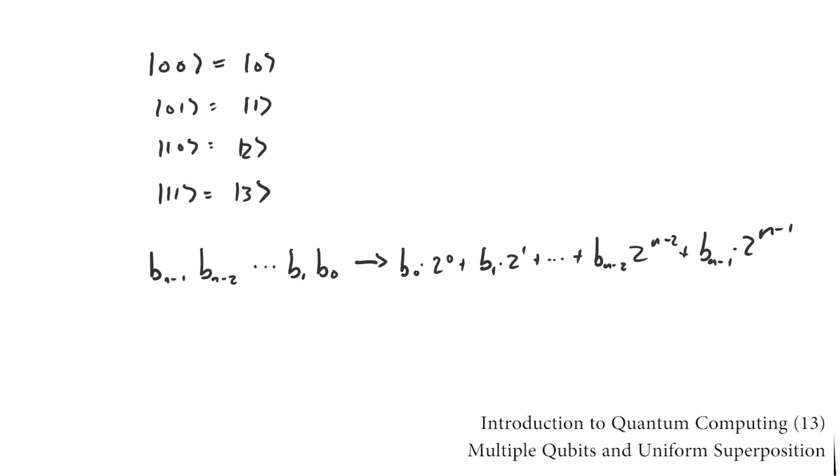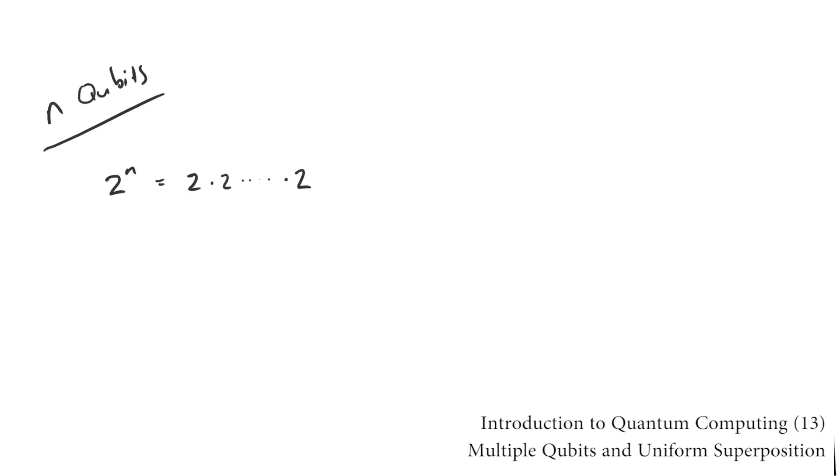In general, an n qubit system will have 2^n distinguishable states. The computational basis vectors for the space that the state vector lives in are typically labeled 0 through 2^n - 1. The inner product for the space is the obvious generalization from the single qubit case.